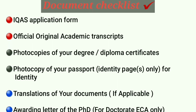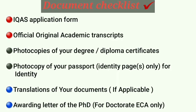Please note that some documents are optional based on your application requirements. First is the IQAS application form. Second is official original academic transcripts. Third is a photocopy of your degree or diploma certificate. Fourth is a photocopy of your passport for identity purposes. If applicable, a translation document. And if you are applying for a doctorate ECA, you will need viva data for your PhD. The first two red bullet points stand for original documents. The third and fourth black bullet points stand for photocopies — you don't need to submit originals for those. The last two blue bullet points are optional, required only if applicable to your application.